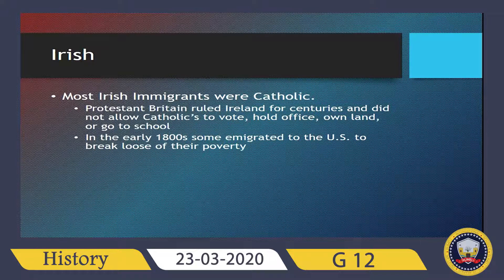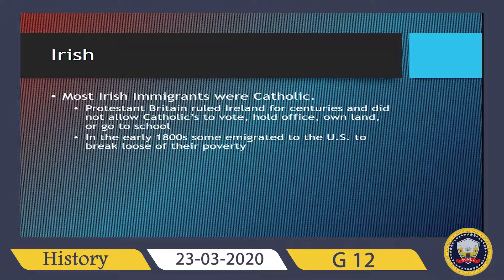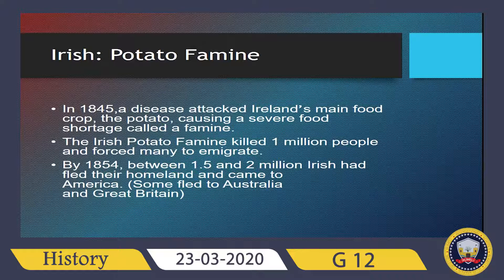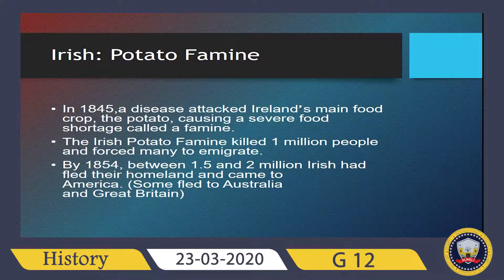Most Irish immigrants were Catholic, so one reason for emigrating was religious issues. Protestant Britain ruled Ireland for centuries and did not allow Catholics to vote, hold office, own land, or go to school. In the early 1800s, some emigrated to the United States to break loose of their poverty. In 1845, a disease attacked Ireland's main food crop — the potato — causing a severe food shortage called famine. The Irish Potato Famine killed one million people and forced many to emigrate. By 1854, between 1.5 and 2 million Irish had fled their homeland and came to America.